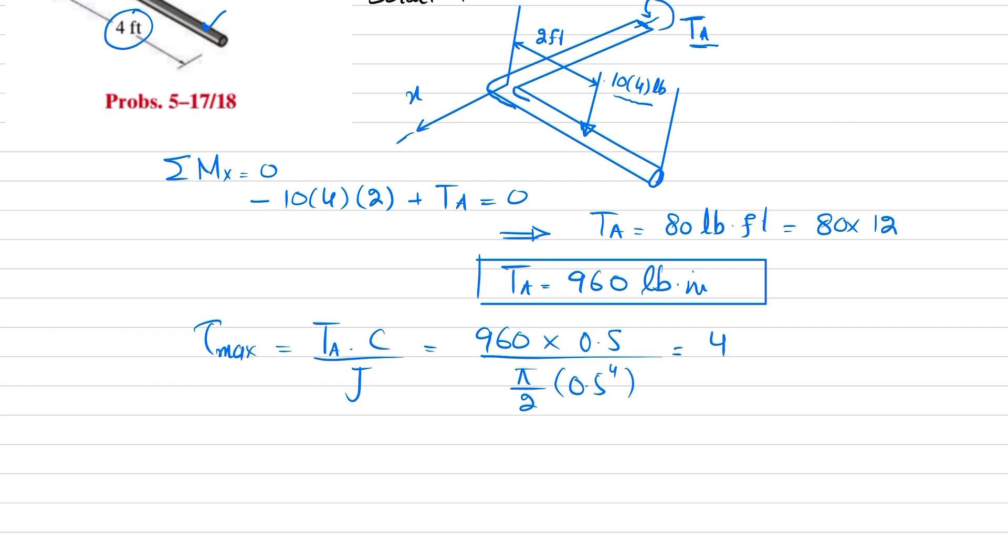When you solve it you will get maximum shear stress is 4,889.24 psi, or you can say that maximum shear stress at point A comes out to be 4.89 ksi.